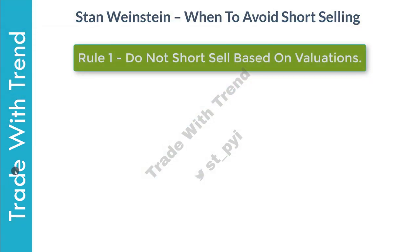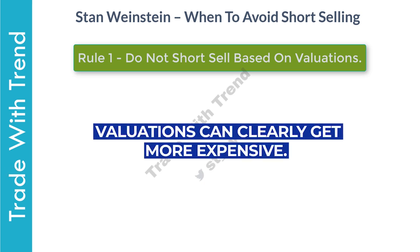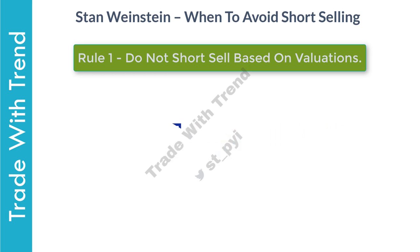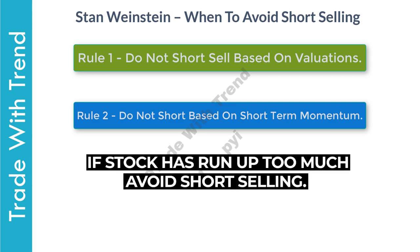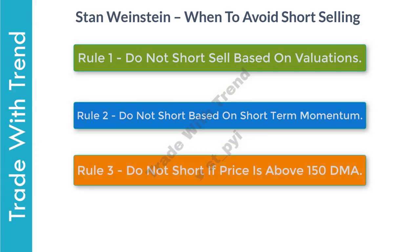Let me now cover some specific rules on when not to short sell, as clearly written in Stan Weinstein's book. First, do not short sell based on the PE ratio of the stock — too many traders make this mistake, as valuations can clearly get more expensive. Second, do not short sell based on recent movement; when a stock runs up too much over the short term, the natural inclination to short sell it should be avoided. Third, do not short sell when the stock is above the 150-period average or is in stage two. Short selling should only happen in stage four when price is clearly below the 150-period moving average.